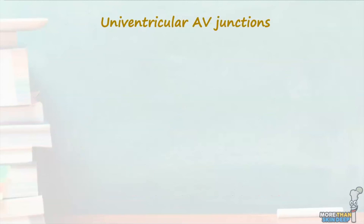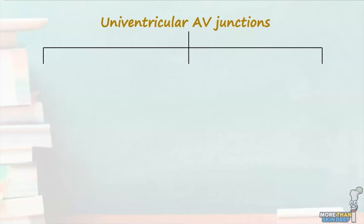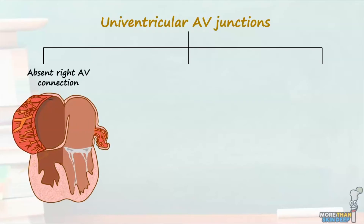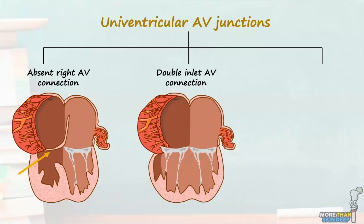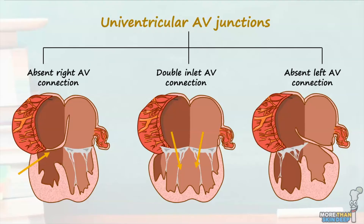For completeness, let's also briefly cover univentricular AV connections. There are three types of univentricular AV junctions. The first type are those with an absent right AV connection, where the right atrium is not connected to its underlying ventricle. The second type are hearts with a double inlet AV connection, where blood from both AV connections drains into one dominant ventricle. The third and final group are those with an absent left AV connection, where the left atrium is not connected to its underlying ventricle due to the presence of fibro-fatty tissue. It's worth mentioning that a univentricular junction can present with either a dominant left ventricle, a dominant right ventricle, or a solitary indeterminate ventricle whose trabeculations do not resemble either the left or right ventricles.